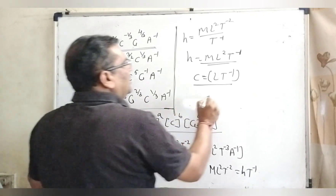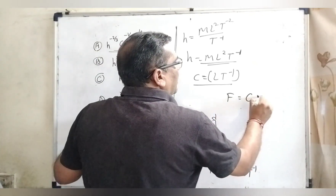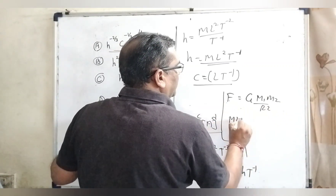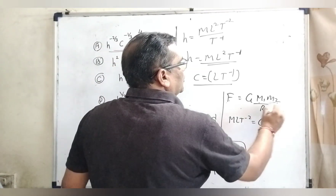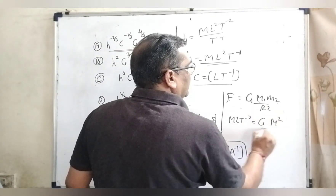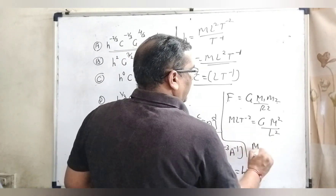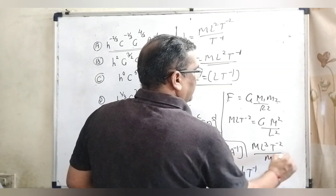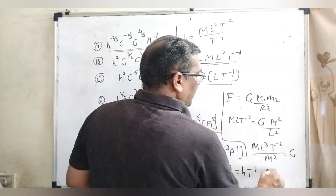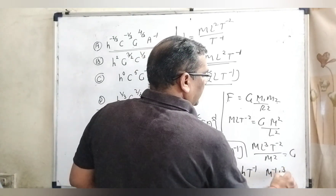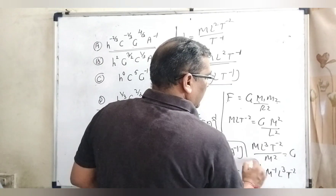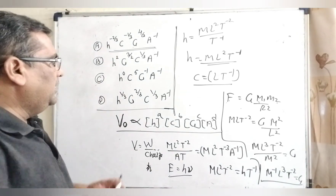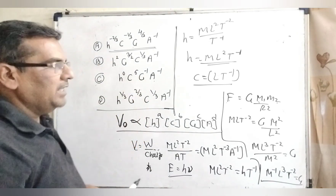Now, what is the formula of G? We know F = GM₁M₂/R². The dimension of force is MLT⁻², and here we have two masses M² and length squared L². So G = ML²T⁻²/M²·L² which gives M⁻¹L³T⁻². This is the dimension of G. And A (ampere) is a fundamental unit, so we put it as it is.